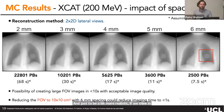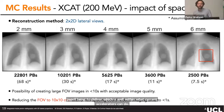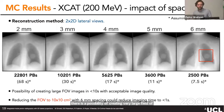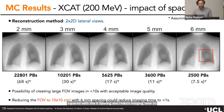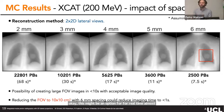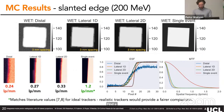Assuming a realistic 3 ms per pencil beam delivery — well within current accelerator capabilities — with 5 mm spacing you can create large 30×30 cm field-of-view images in about 10 seconds with acceptable quality. Reducing the field of view to 10×10 cm with 6 mm spacing reduces imaging time to less than a second, making near real-time tracking feasible if you can locate the tumor and image that smaller region.